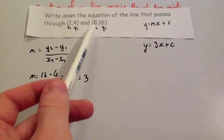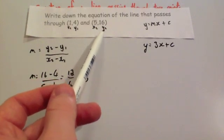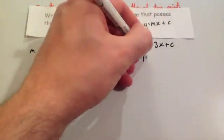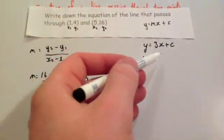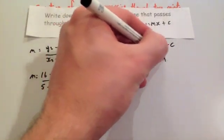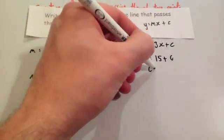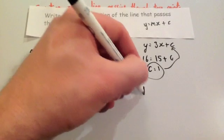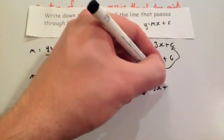So let's put in (5,16). So the x part is 5. The y part is 16. So y is 16. So you're going to get 16 equals 3 times x. So that's 3 times 5, which would be 15, plus c. So that means that c has to be 1. So c equals 1. So you then put this back into here. So you're going to get y equals 3x plus 1.